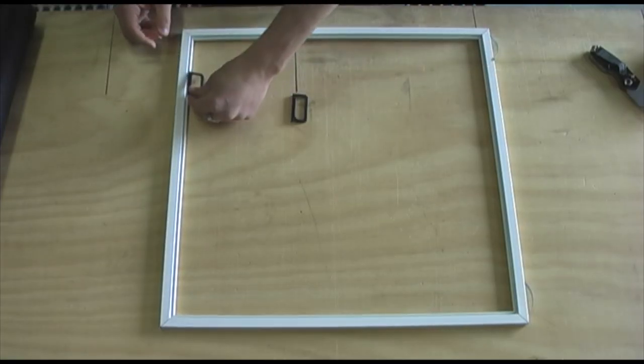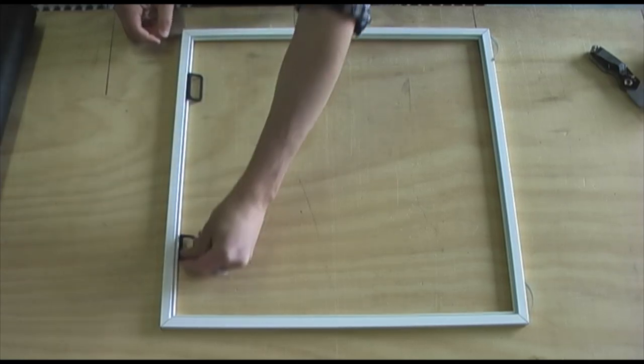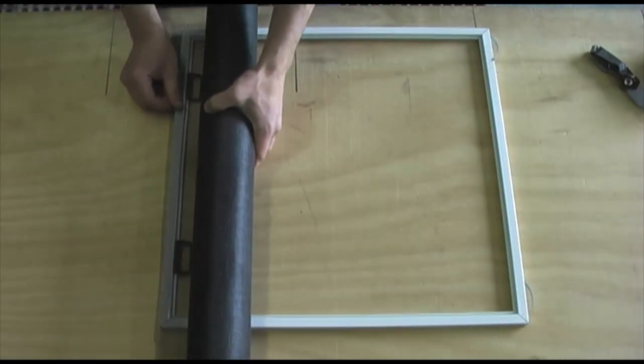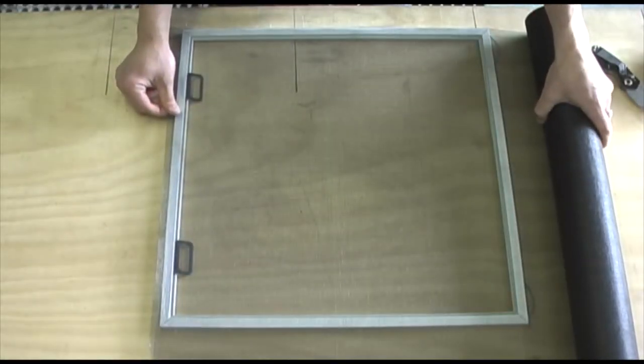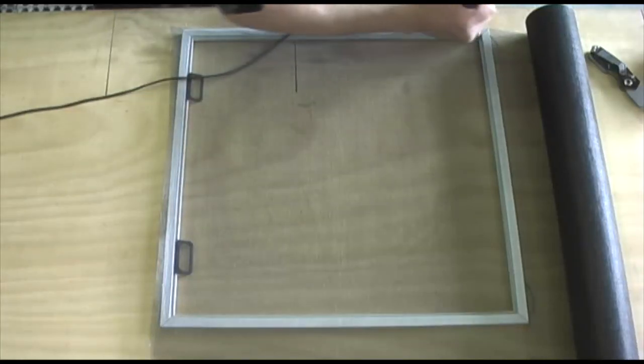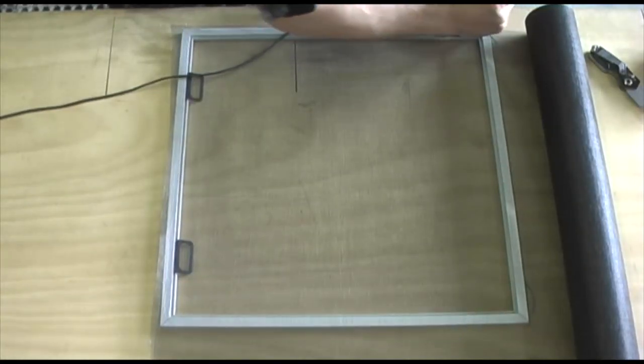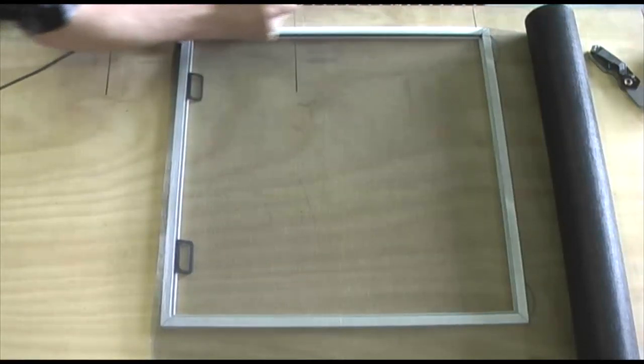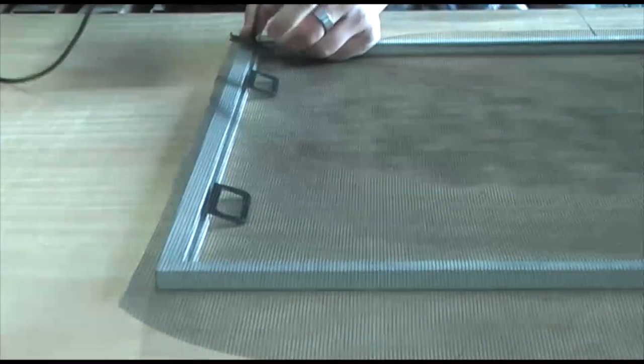After you have selected your screen mesh and spline, you can begin screening. We are going to screen in pull tabs to use along with our tension springs. We are also using charcoal fiberglass screening material. Make sure that your screen overlaps the edges of your actual frame in all areas. When rolling, press firmly and try and get one clean movement.